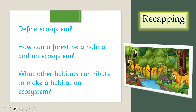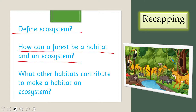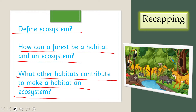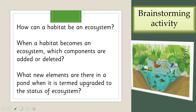Let's quickly recap what we did in the previous lecture. Define ecosystem carefully — pause the video and answer. How can a forest be a habitat and an ecosystem? What other habitats contribute to make a habitat an ecosystem? Now tell me: how can a habitat be an ecosystem, and when a habitat becomes an ecosystem, which components are added or deleted?